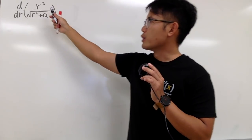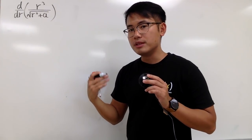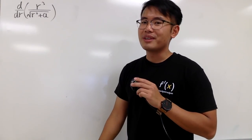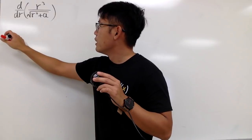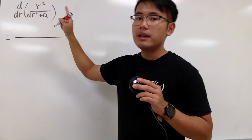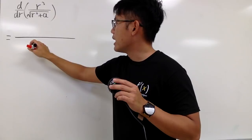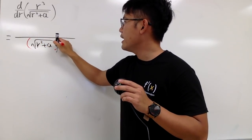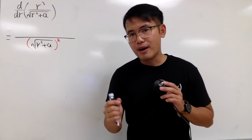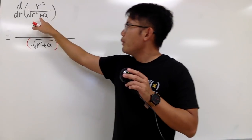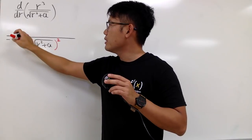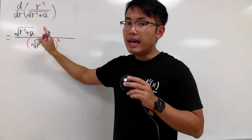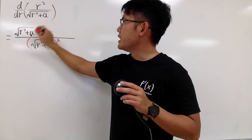Since this is a quotient of two things, we are going to be using the quotient rule — especially because the denominator we cannot simplify this expression. Quotient rule in action: first, I am going to square the denominator, so I'll put down square root of r squared plus a in parentheses and square that. Then the quotient rule says write down the bottom function — that's square root of r squared plus a — and multiply by the derivative of the top.